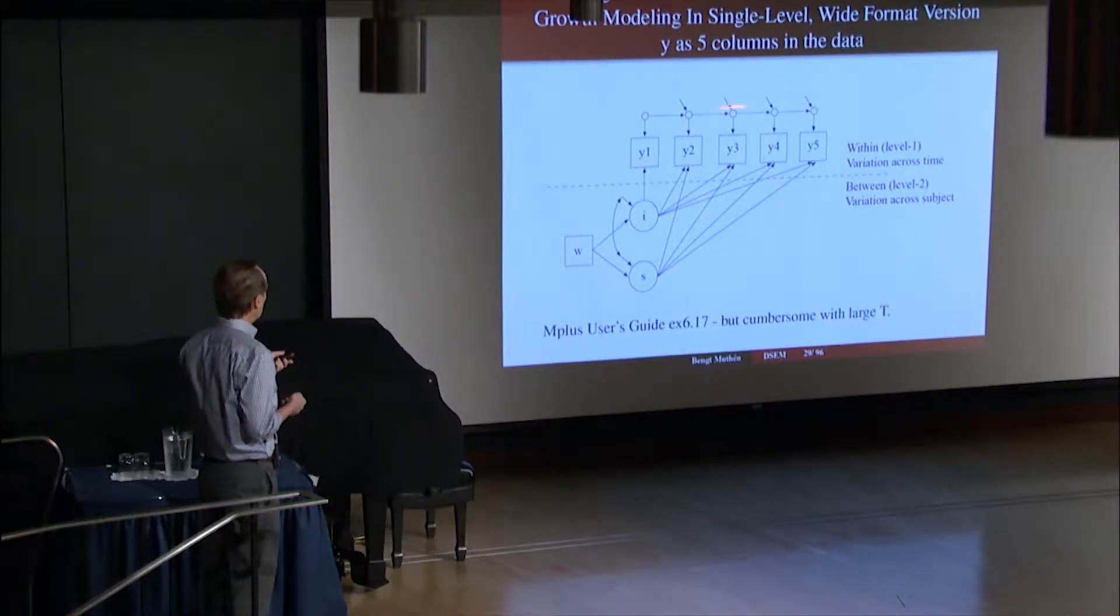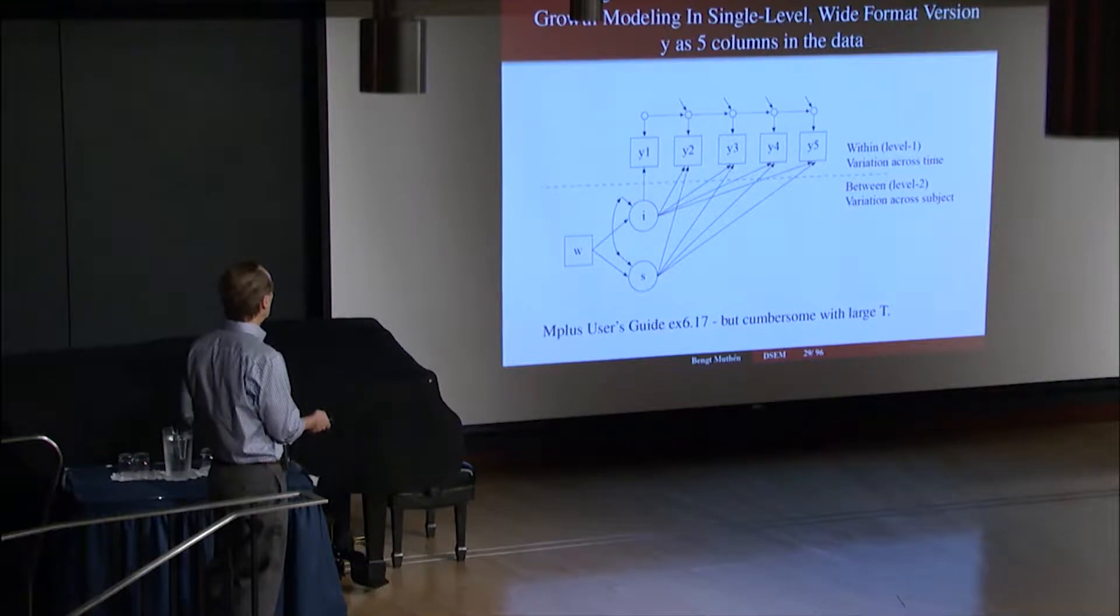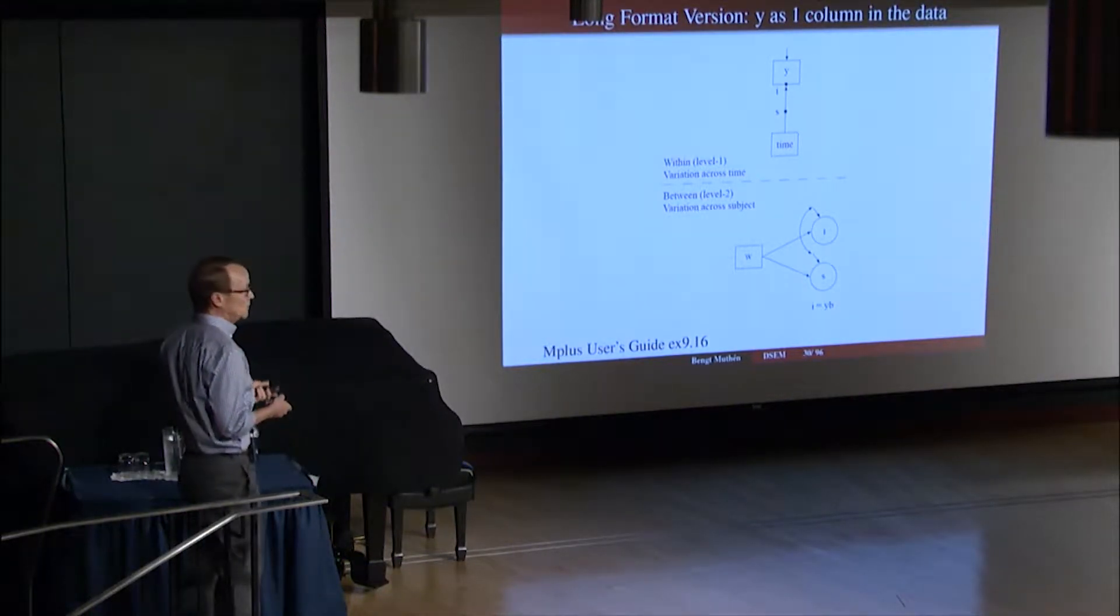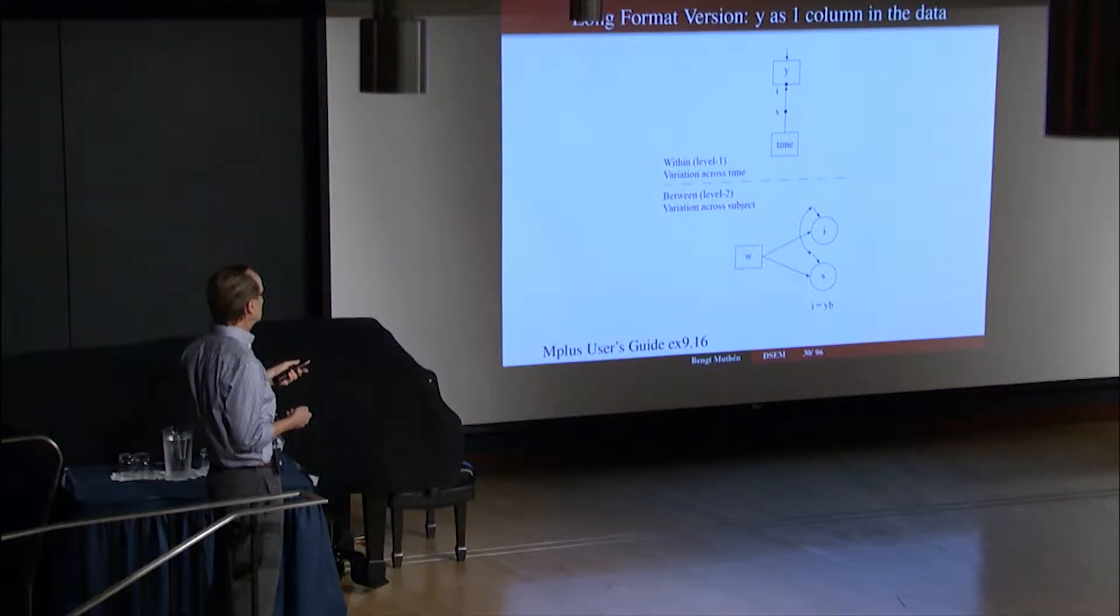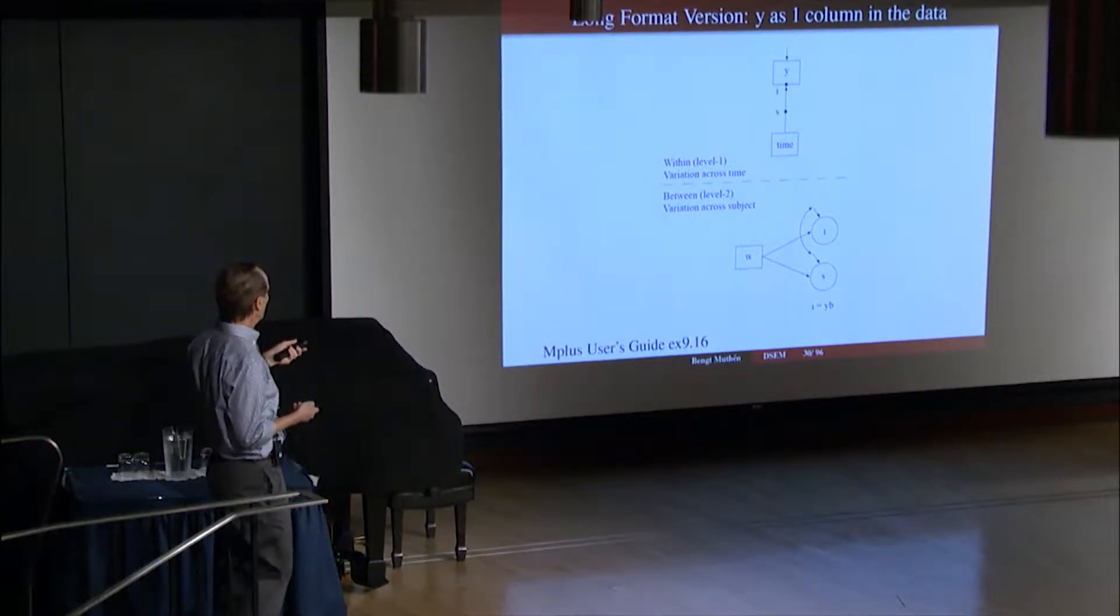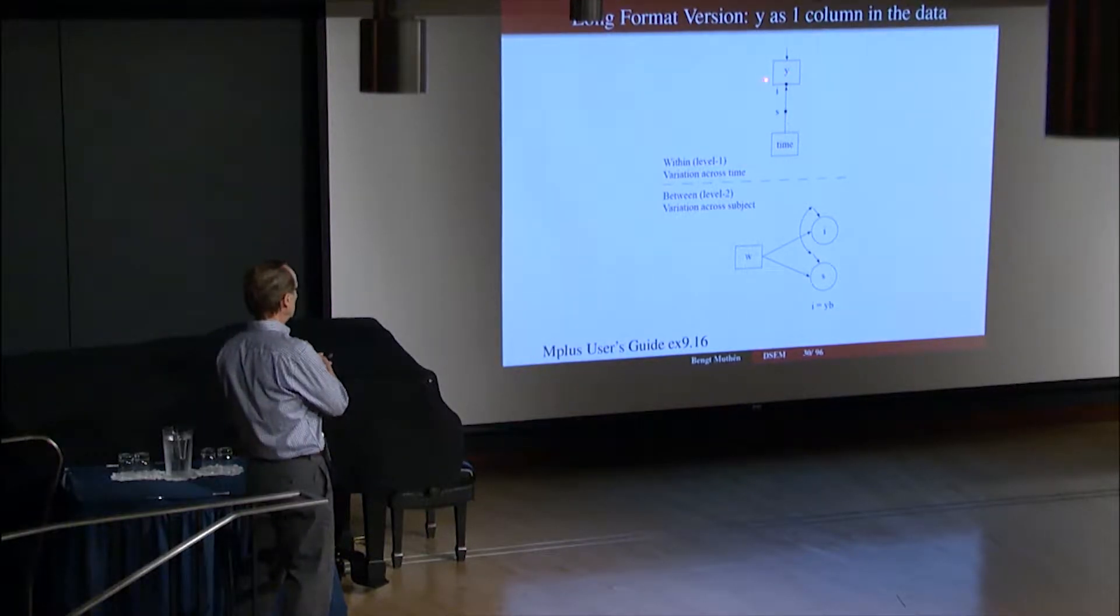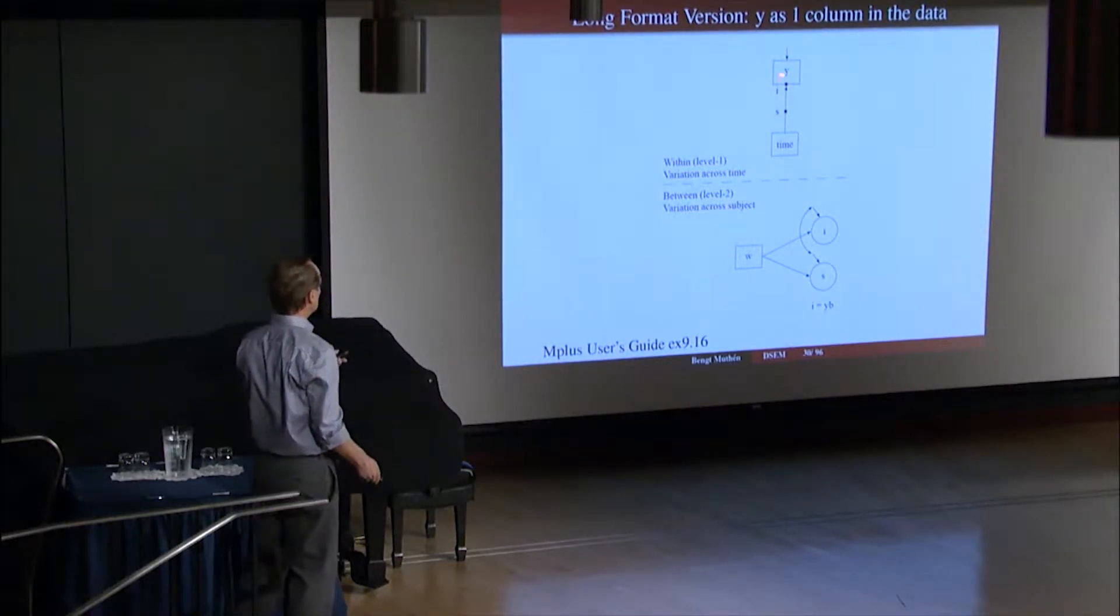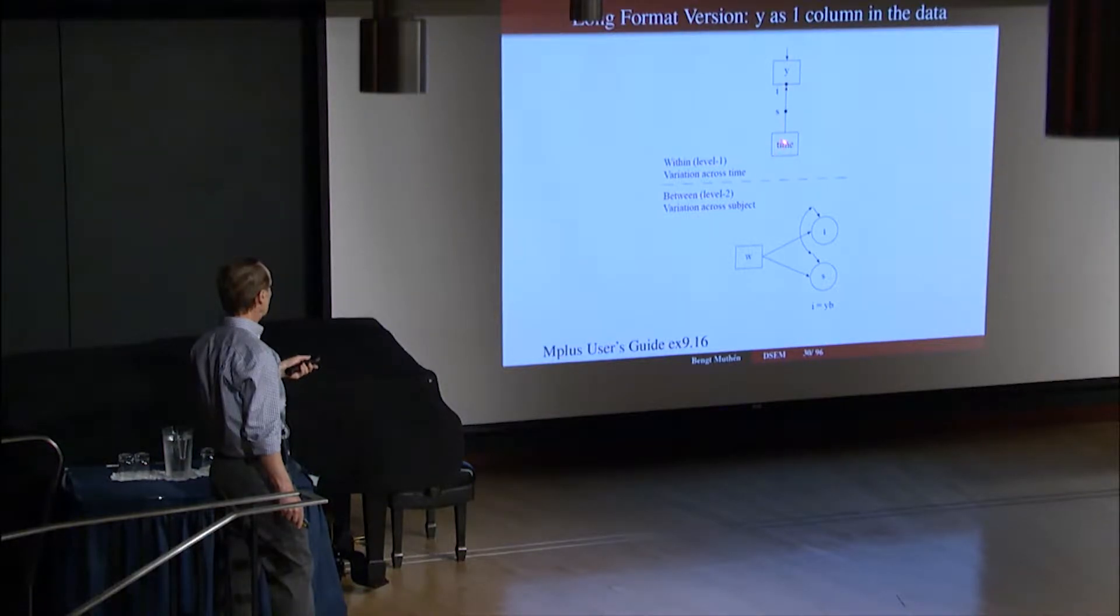This is a wide analysis, I want to repeat, and that means that Y has 5 columns in the data. Of course, solving problem 2, we are familiar with how to do that. We switch from single-level wide format to two-level long format, and Y ends up as only one column in the data. So we don't have, when we have a hundred time points, we don't have a hundred columns—we have just one. And we regress Y on time, and this is a within-level regression. This is a two-level analysis, you have within and between.